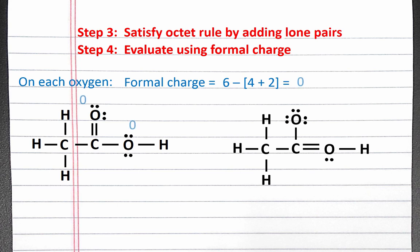The formal charge for each of these oxygen atoms is zero. To calculate the formal charge of the double bonded oxygen in the structure on the right, oxygen normally has six valence electrons, subtract two lone pair electrons and three bonds.